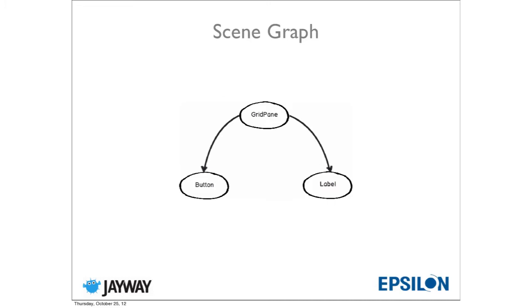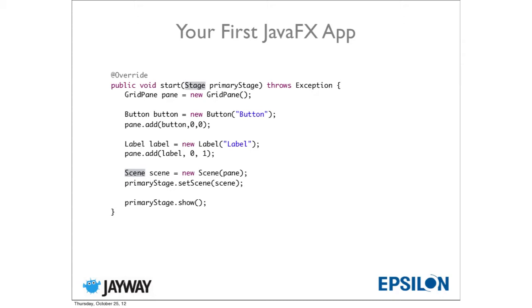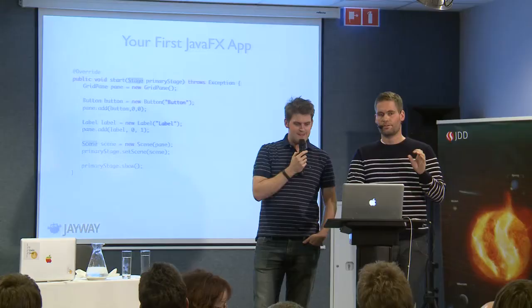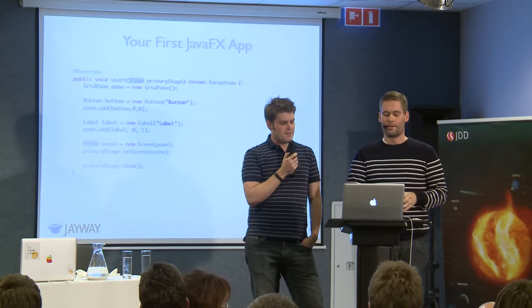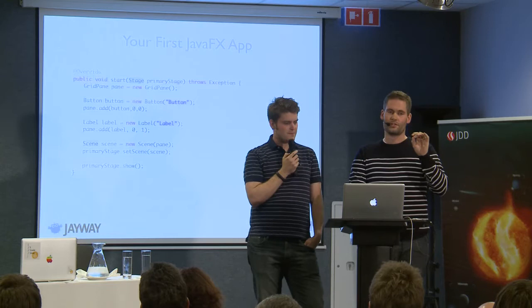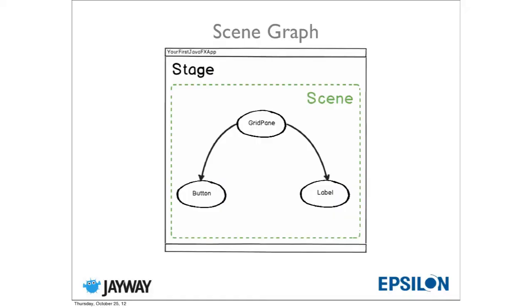For the simple example, the scene graph has a GridPane as the root node, with a Button and Label as leaf nodes. There's also a Stage and a Scene. The Stage is like a window — kind of like a JFrame. The Scene is more like the content pane. So we have the Stage, inside it the Scene, and inside the Scene is the scene graph.